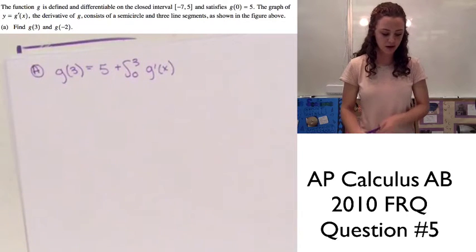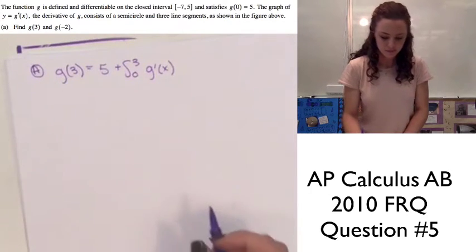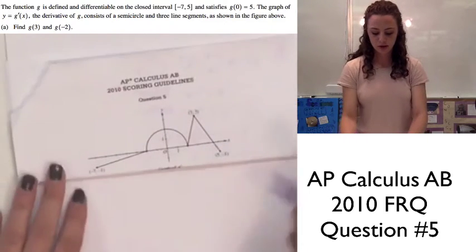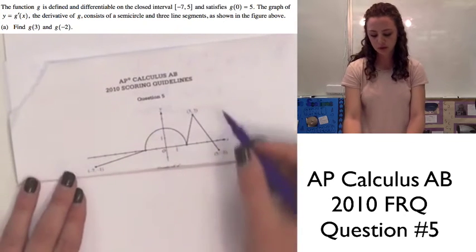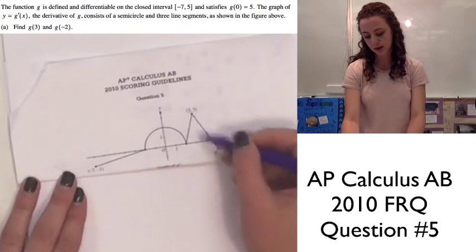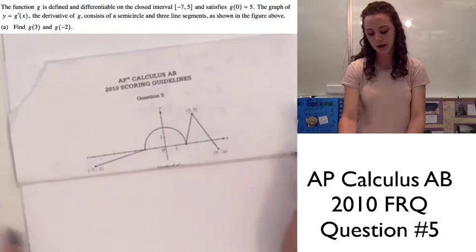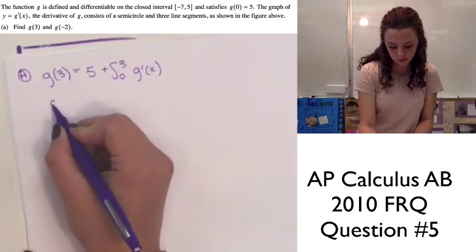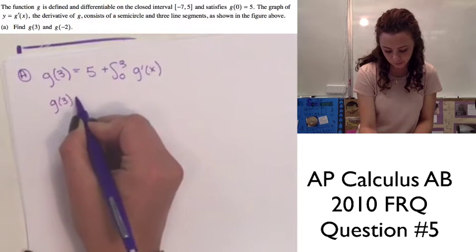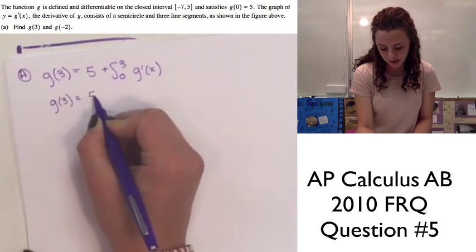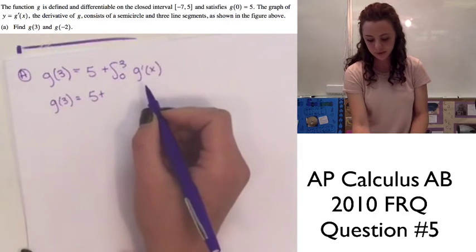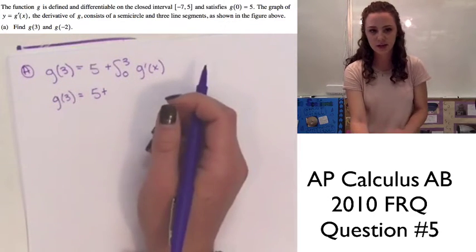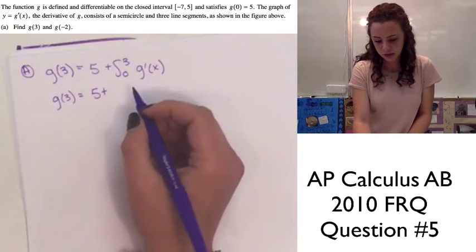Looking at the graph, we can see that from 0 to 2 there is a quarter of a circle, and then we have a triangle with a base of 1 and a height of 3. We use geometric shapes to evaluate the integral as the area under the curve.